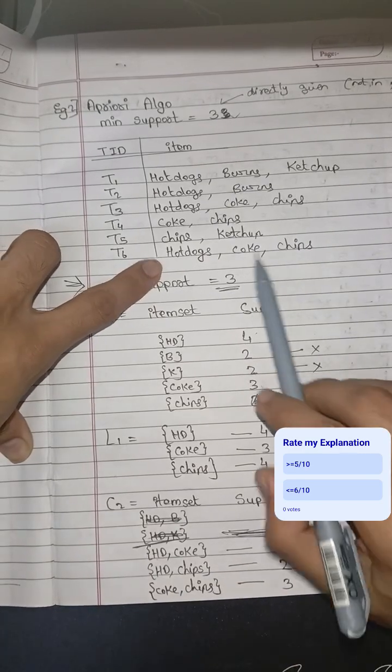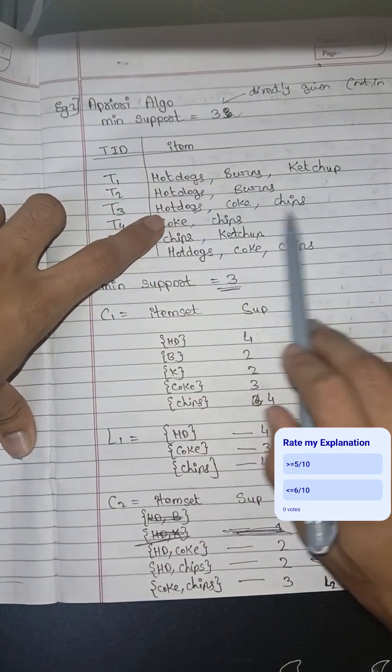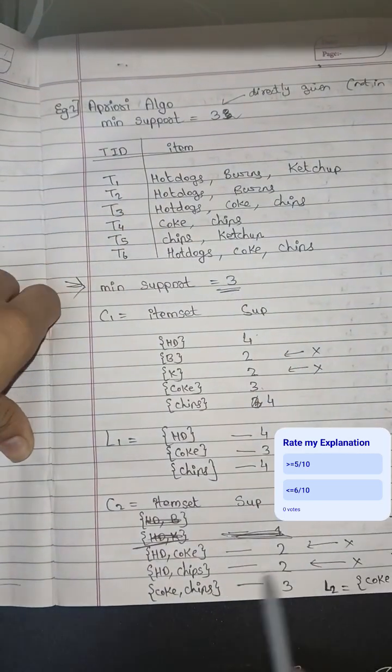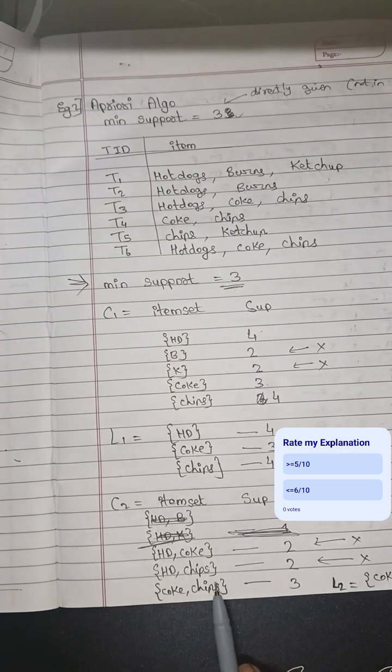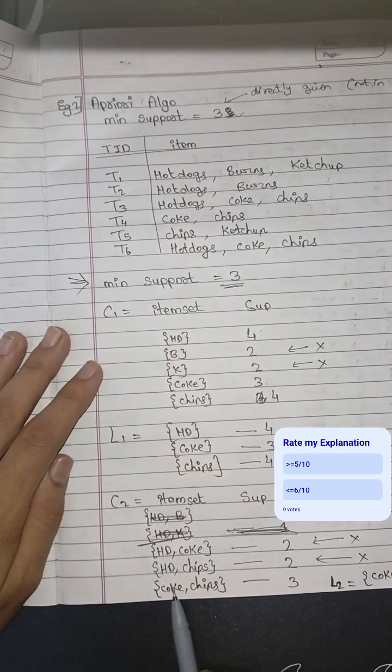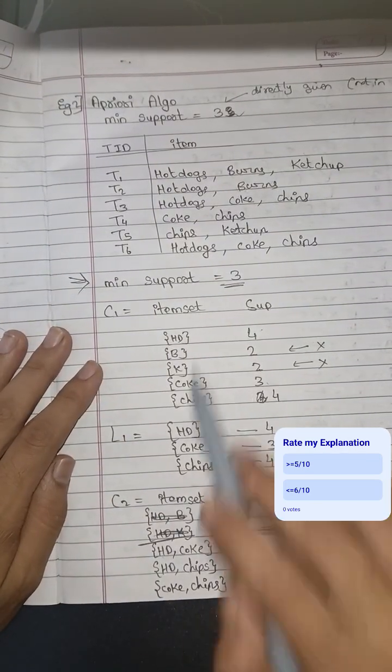Hot dog and chips. First time, second time. Two times hot dog and chips are appearing. Coke and chips.